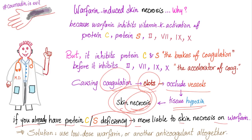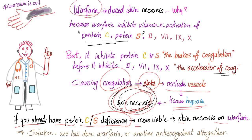If you already have protein C or protein S deficiency, you are more liable to skin necrosis when you take warfarin. Think about it: if you have a genetic problem affecting your brakes, your brakes are already weak. Now you take warfarin to further inhibit the brakes — you'll have no brakes at all, only the coagulation accelerator. You will have lots of thrombosis leading to lots of skin necrosis. So if a patient has protein C and S deficiency, don't put them on warfarin. If you must, use low-dose warfarin, or prefer other anticoagulants.